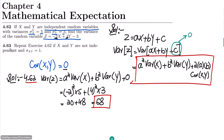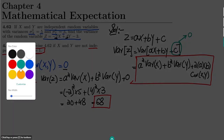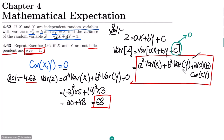In question 4.63, we repeat the same problem except that x and y are not independent — they are dependent upon each other — and the covariance between them is also given as σxy. We will now utilize the full equation including the covariance term.